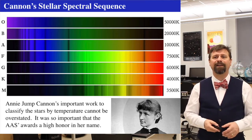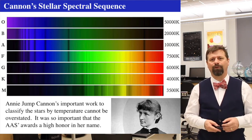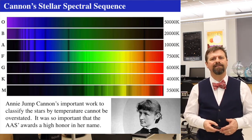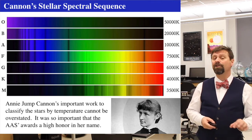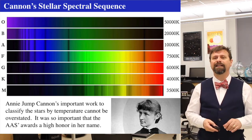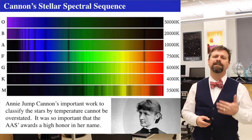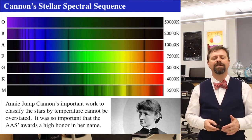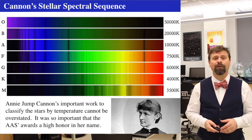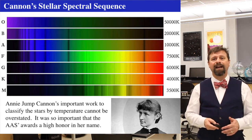Her stellar spectral sequence was incredibly important and cannot be overstated. It classified stars from O's, which are brightest in the blue, to M's, which are brightest in the red. She determined that the temperatures of stars range from about 50,000 Kelvin in the O's, all the way down to about 3,000 Kelvin in the M's.